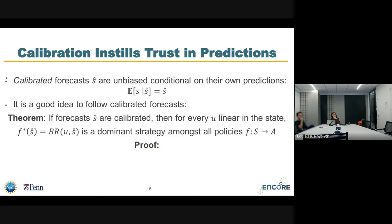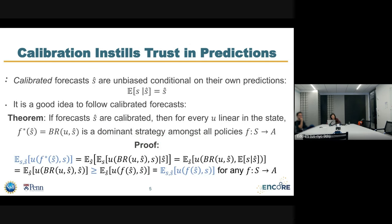It's a good idea to follow calibrated forecasts — literally, to take them at their word. The proof is pretty simple. The proof says that no matter what other policy you could have, the policy which simply best responds to the predicted calibrated state as if it was right is always the dominant thing to do. We start off with F*, the best response strategy, and after that we can separate the expectations and pull in the expectation over the true state s.